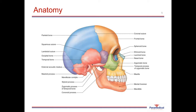These skull bones create an enclosed cavity with one major opening — the foramen magnum — where the spinal cord enters and connects to the brain tissue. There are a few smaller openings, but all are filled with nerves and blood vessels, so the skull is still considered an enclosed cavity that encases and protects the delicate gelatinous brain tissue. Interestingly, the cranial bones are not fused at birth; they begin fusing around nine months after birth and are fully fused by approximately 18 months.